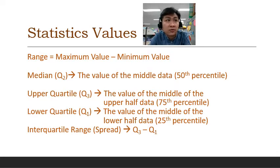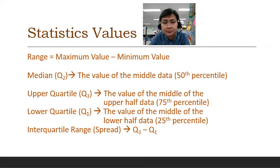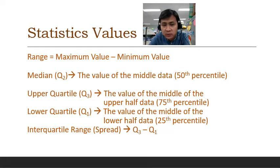The median is also known as the 50th percentile, sometimes represented by the symbol Q2. It is the data value at the middle position. The upper quartile is the middle value in the upper half of the data, also known as Q3. The lower quartile is the middle value in the lower half of the data, known as Q1. The interquartile range, which measures the spread of the data, is calculated as Q3 minus Q1.